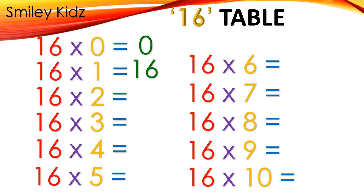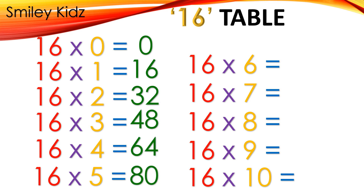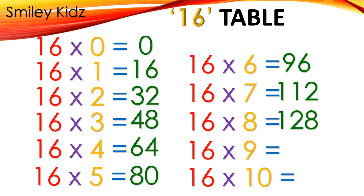Table 16: 16×0=0, 16×1=16, 16×2=32, 16×3=48, 16×4=64, 16×5=80, 16×6=96, 16×7=112, 16×8=128, 16×9=144, 16×10=160.